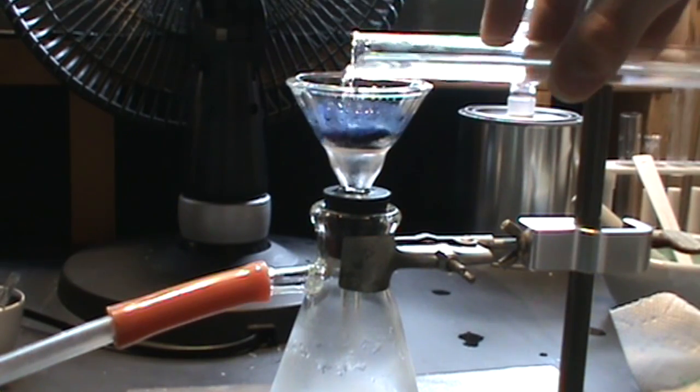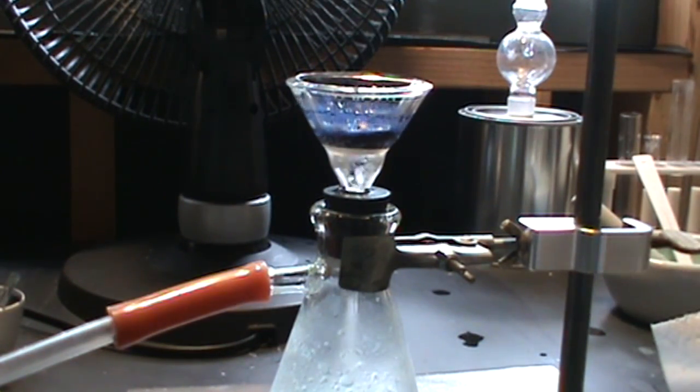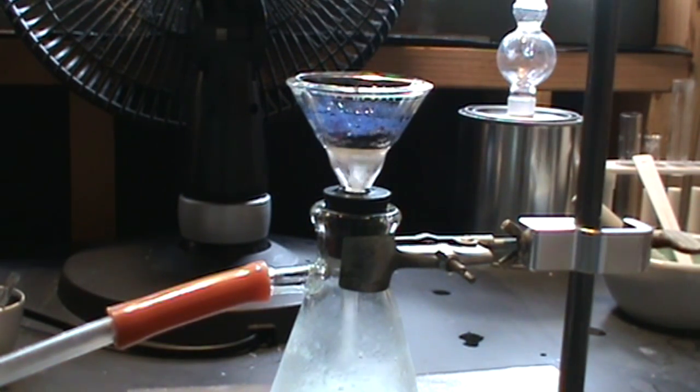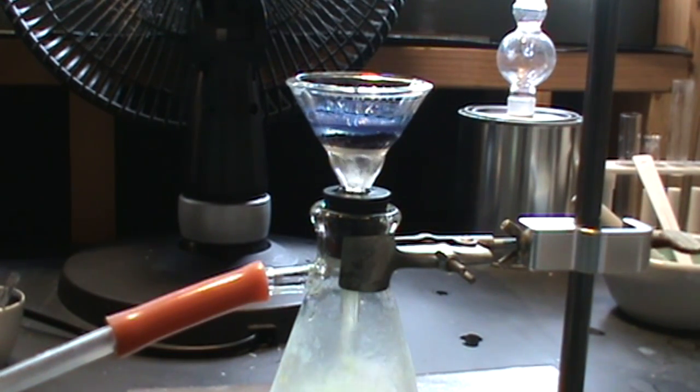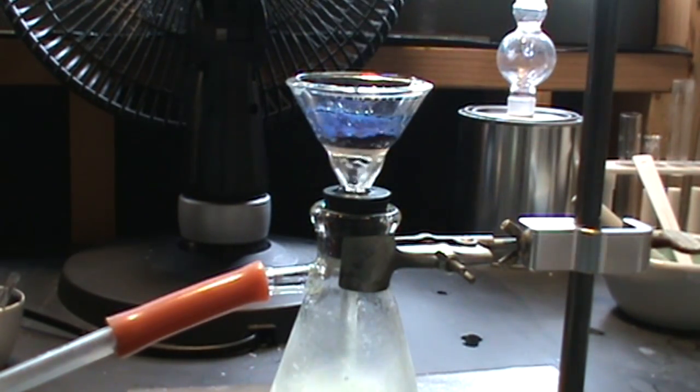Then wash twice with about 10 mL of dilute sodium hydroxide solution. Next, do two washes with 15% hydrochloric acid. The color of the filtrate in this wash is light green, indicating that the acid is dissolving some excess copper too.